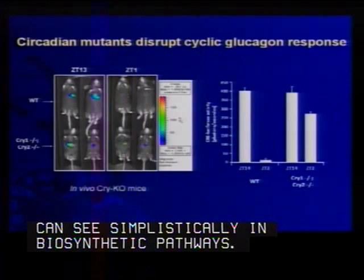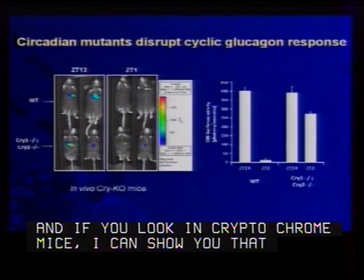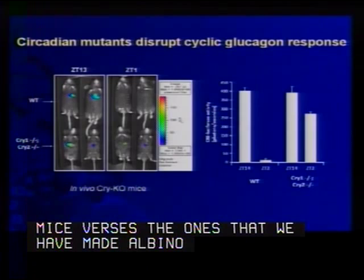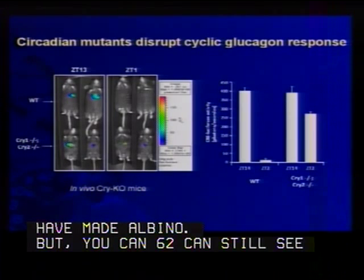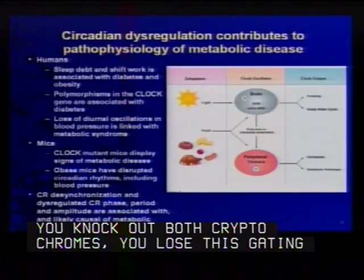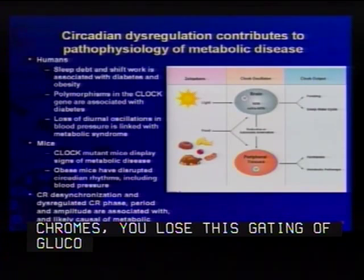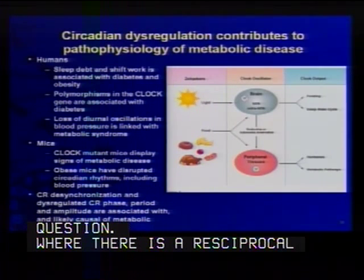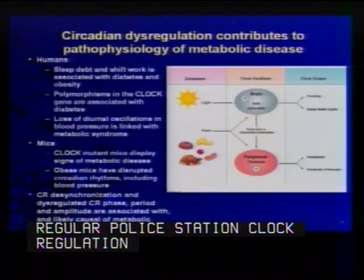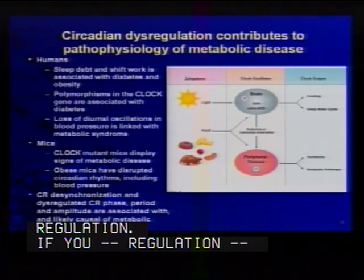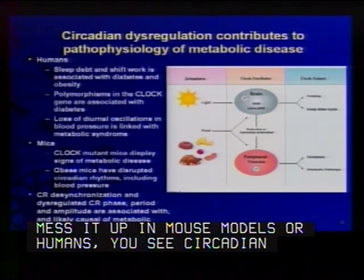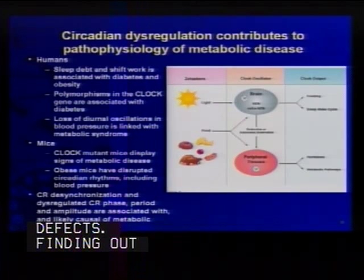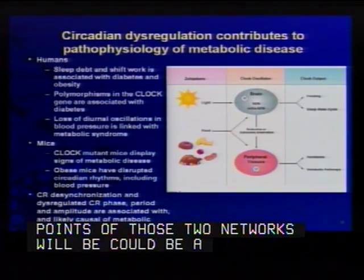If you look in cryptochrome knockout mice, you can see beautifully that if you knock out both cryptochromes, you lose this gating of glucagon receptor activity. This really points to a growing field where there's a reciprocal relationship between metabolic regulation and clock regulation: if you mess up metabolic regulation in mouse models or in humans, you see circadian defects; if you mess up the clock, you see metabolic homeostatic defects. Finding out what the mechanistic touch points of those two networks are is going to be a new way to think about and approach metabolic disorders.